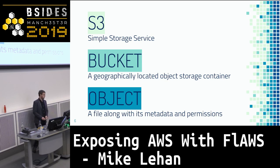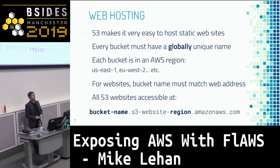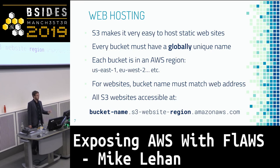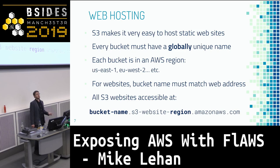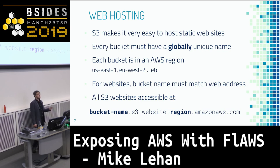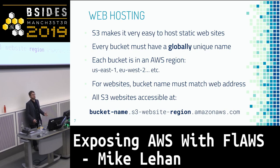Web hosting has become one of the most popular uses of S3. You can click a button in the console and host a website directly from S3. One key thing is that bucket names are globally unique — your bucket name must match the address of your website. So if you want to host google.com from a bucket, you need a bucket called google.com, and only one AWS account in the world can own a bucket with that name. This leads to a slightly strange domain-squatting issue where you can predict domains that might want to host S3 in the future and take their bucket names.